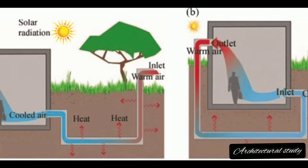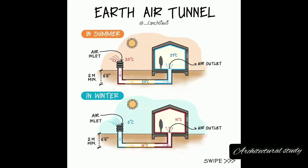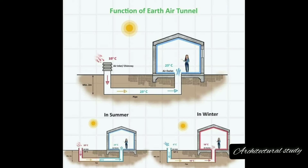Principle of Earth-Air Tunnel: It is a technique used to generate cool air in the summer and hot air in the winter. The process involves moving outside air through a duct system installed deep inside the Earth's surface. Because of the Earth's constant temperature throughout the year, it exchanges heat while passing through the ductwork.